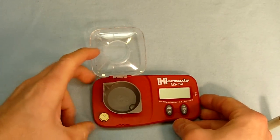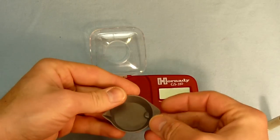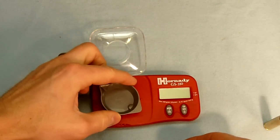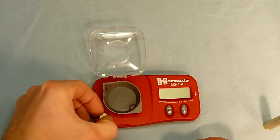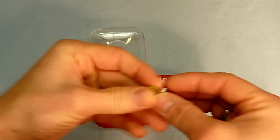So when we open this, we can see that we have this tray which we can use to dispense loads into, and we also have a 10-gram calibration weight that we can use to calibrate the scale.